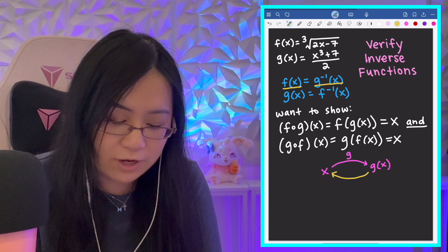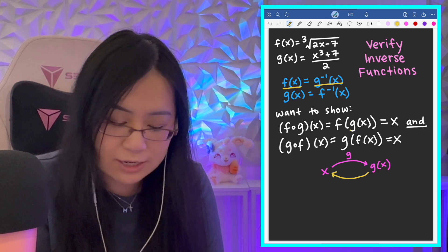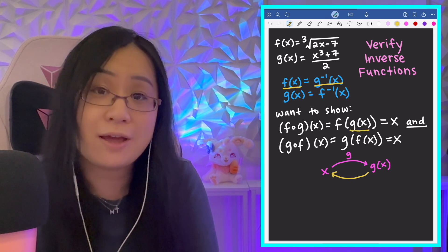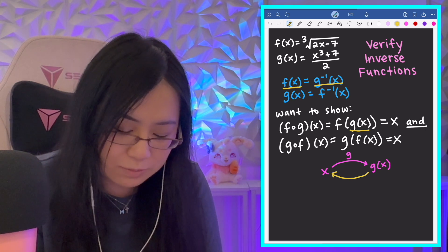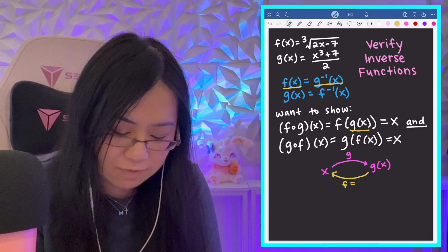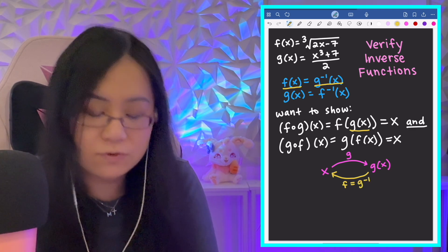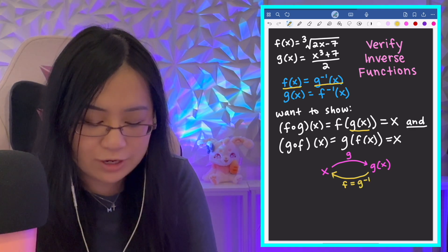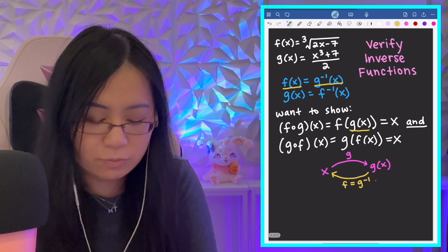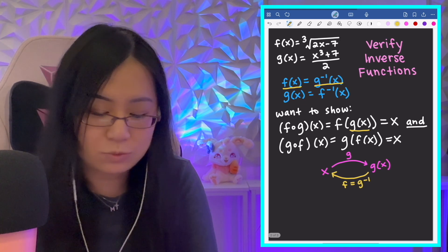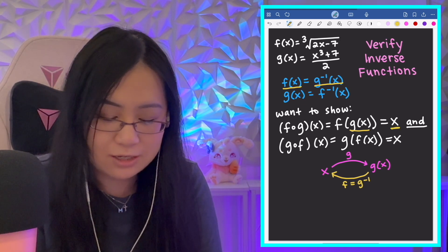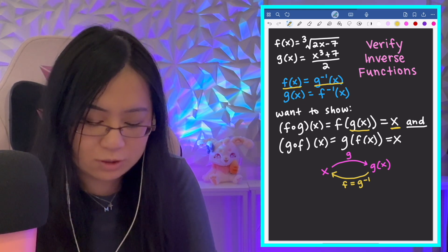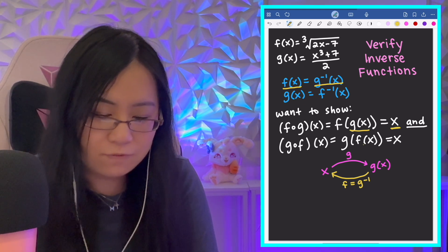So, if I put in g(x) as an input into my f(x), that's basically the inverse. So, if f is the inverse of g(x), then I take that g(x) and bring it back to x, which is why I'm expecting x here. And as you can imagine, it's the same thing for the other one.